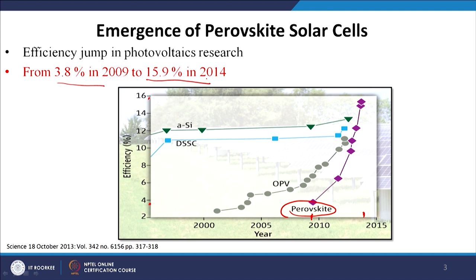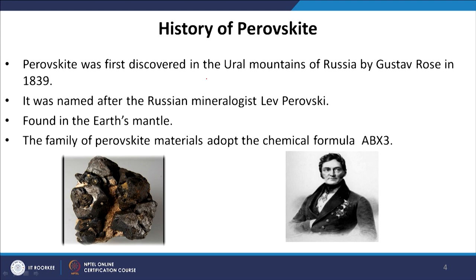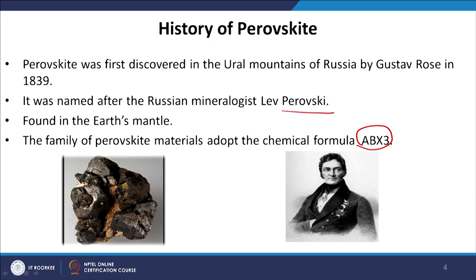But what is perovskite, or what does the name perovskite stand for? Perovskite was first discovered in the Ural Mountains of Russia by Gustav Rose in 1839. It was named after the Russian mineralogist Lev Perovski. The structure name came from this word perovskite. It is found in the earth's mantle, and the family of perovskite materials adopts the chemical formula ABX3.